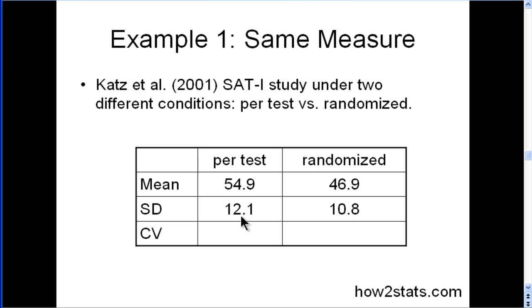You couldn't just look at the two standard deviations and say the standard deviation is 2.1 bigger than this one in a meaningful way, because the mean is also larger in this case than the randomized condition.